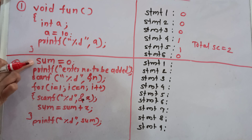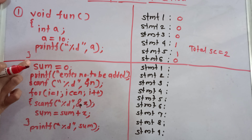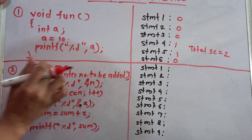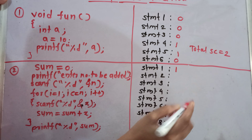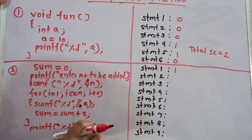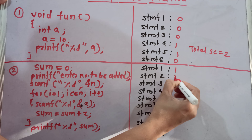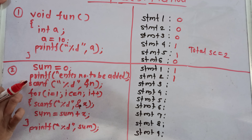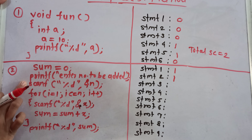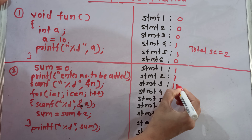The first instruction is sum is equal to 0, and as it executes one time, the step count is 1. Next is the printf statement, which prints 'enter the number to be added' — it executes one time, so the step count is 1. Next is the scanf statement where we scan the value of n from the user — again the step count is 1.